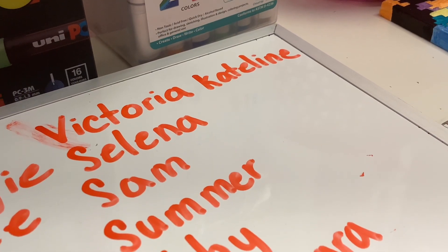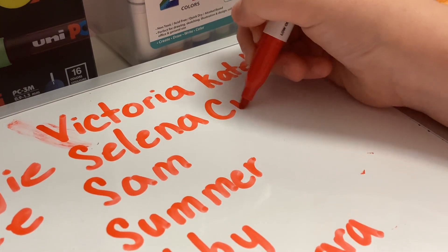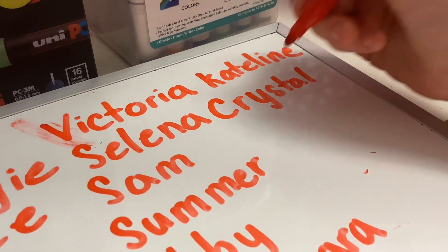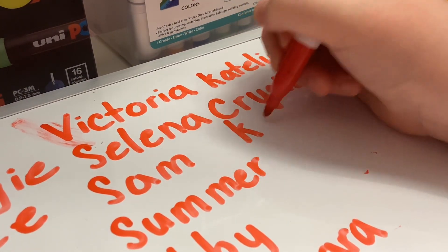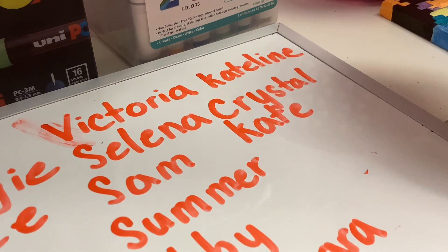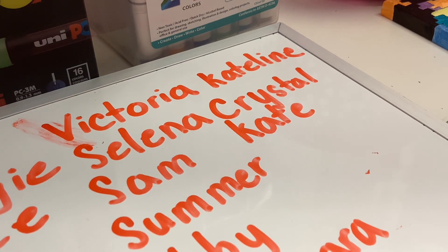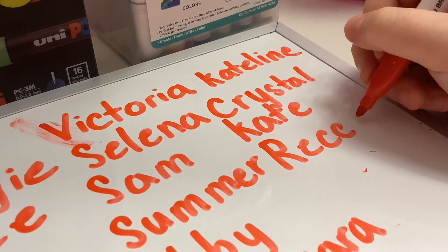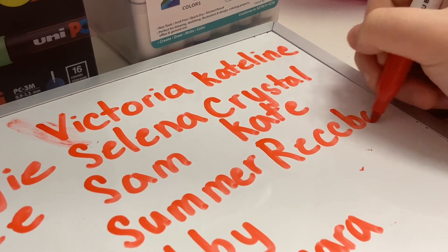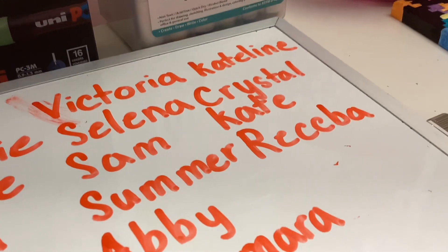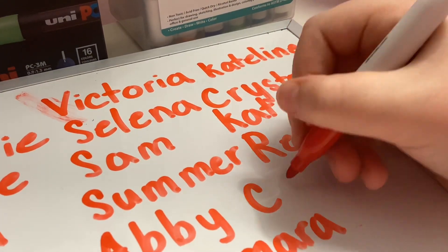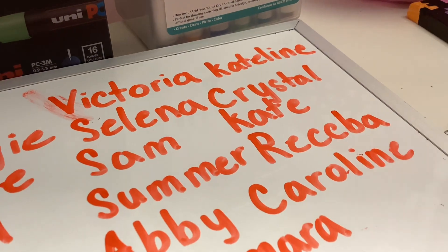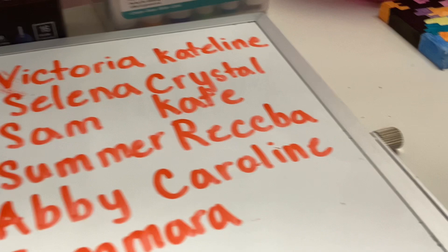I'll show you how to spell their names as well. We're going to start with Crystal Kate, so it's just C-R-Y-S-T-A-L and then Kate — K-A-T-E. Crystal Kate. And then Rebecca — R-E-B-E-C-C-A. Rebecca. And then Caroline — C-A-R-O-L-I-N-E. Caroline.